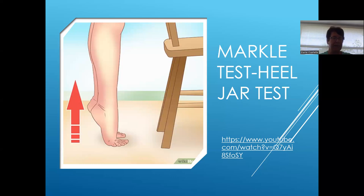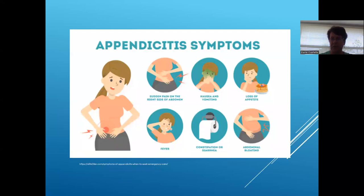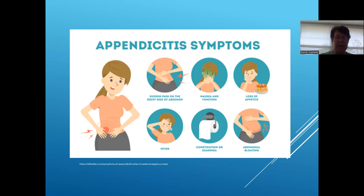There is no perfect test for appendicitis. If you suspect it, you need to refer. Appendicitis is the most common acute surgical condition in youth and affects about 70,000 children in the US annually. The peak incidence in children is between the ages of 10 and 19, and it affects boys more than girls in this age group.